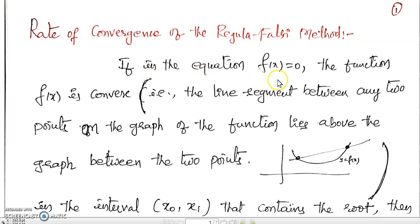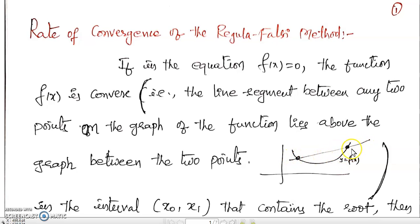Now, if in the equation f(x) = 0, f(x) is a convex function — what is meant by a convex function? This is the curve y = f(x). If I draw a line segment which lies above the curve, then the function is said to be convex. That is, the line segment between any two points on the graph lies above the graph between those two points. So this function f(x) is convex.